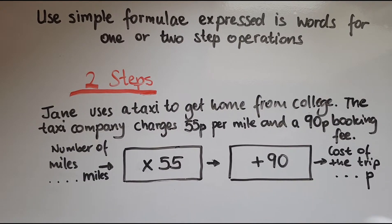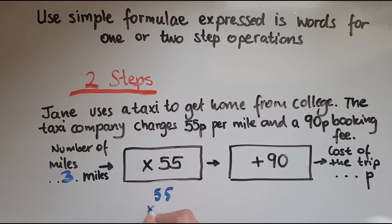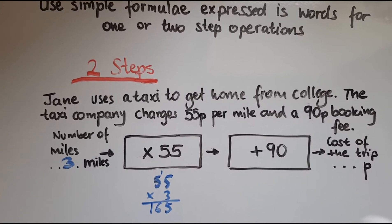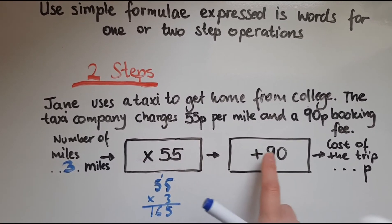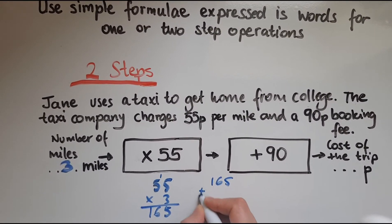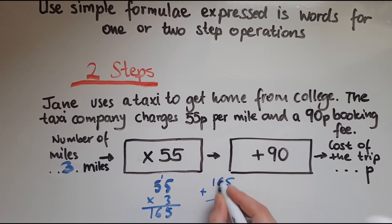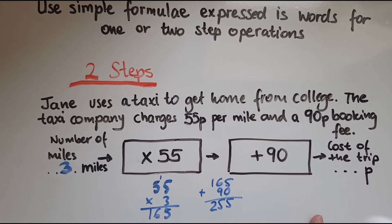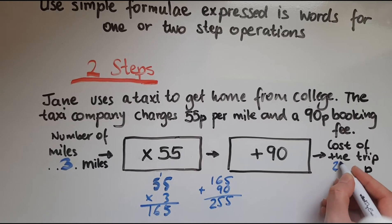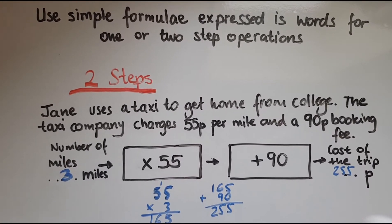If the distance is three miles, we go three times 55. Three times five is 15, so write 5 and carry one. Five times three is 15 and adding that one makes 16, giving 165 pence so far. Now we add 90 to that: 165 plus 90 equals 255. So that is 255 pence — the cost if Jane travels three miles.